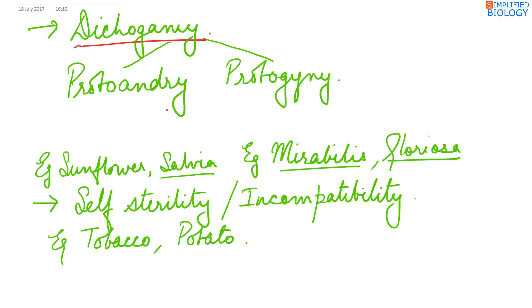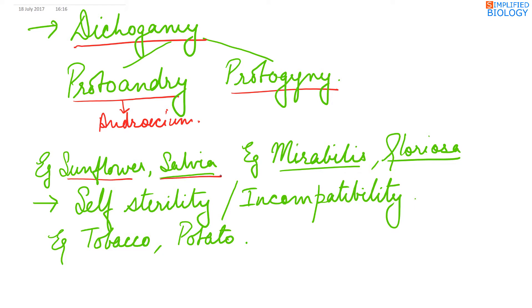Dichogamy means the androecium and gynoecium mature at different times. This is of two types: protandry and protogyny. Protandry, as the name shows, means the androecium or the anther matures first. Example: sunflower and salvia. Protogyny means the gynoecium matures first. Example: Mirabilis and Gloriosa. When the androecium and gynoecium mature at different times, cross-pollination is a must.